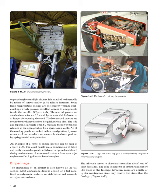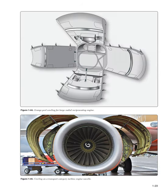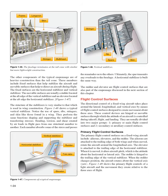The empennage of an aircraft is also known as the tail section. Most empennage designs consist of a tail cone, fixed aerodynamic surfaces or stabilizers, and movable aerodynamic surfaces. The tail cone serves to close and streamline the aft end of most fuselages, and is made up of structural members like those of the fuselage but of lighter construction since it receives less stress. The other components of the typical empennage are of heavier construction. These members include fixed surfaces that help stabilize the aircraft and movable surfaces that help to direct an aircraft during flight. The fixed surfaces are the horizontal stabilizer and vertical stabilizer. The movable surfaces are usually a rudder located at the aft edge of the vertical stabilizer and an elevator located at the aft edge of the horizontal stabilizer.